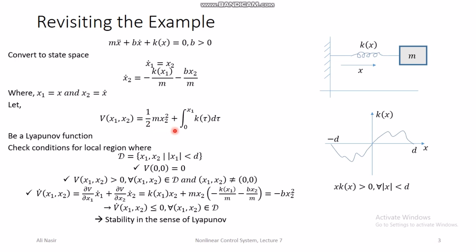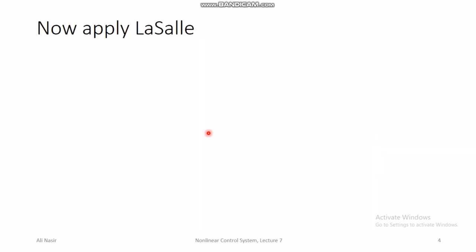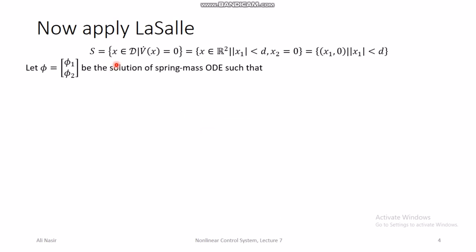In this lecture, instead of trying a different Lyapunov function, we use the same energy Lyapunov function and apply LaSalle's theorem to prove asymptotic stability. The set S is where V̇ = 0, which consists of all (x₁, x₂) with x₂ = 0, and x₁ within the local region |x₁| < d. So S = {(x₁, 0) : |x₁| < d}, or equivalently, S = {x ∈ R² : |x₁| < d and x₂ = 0}.